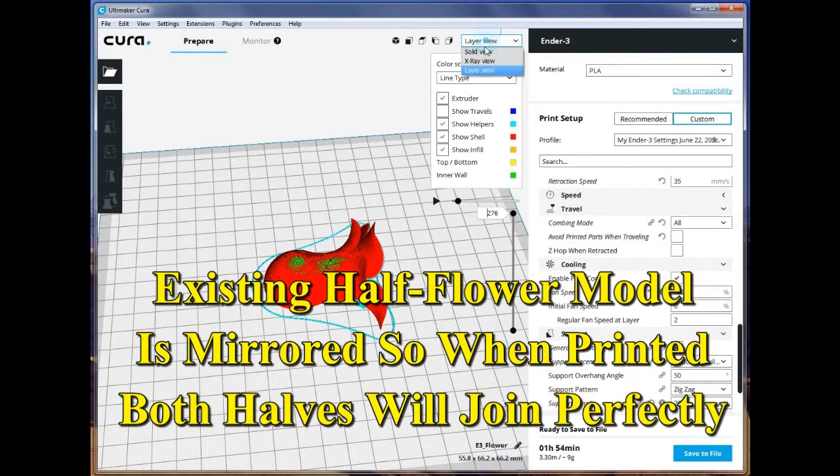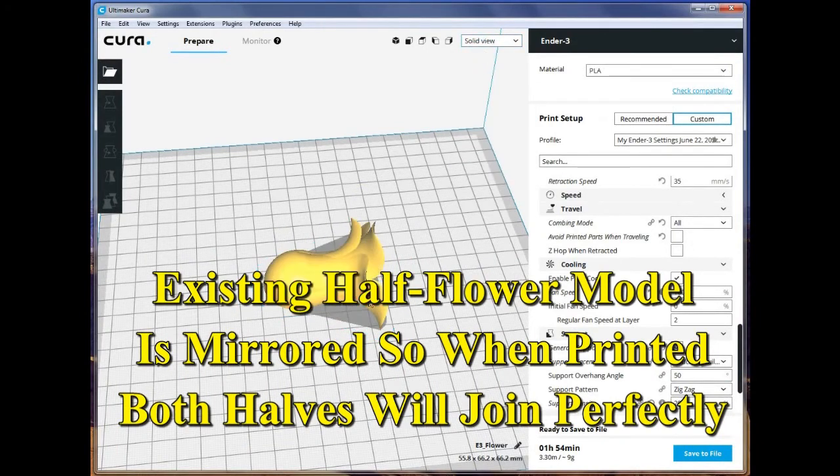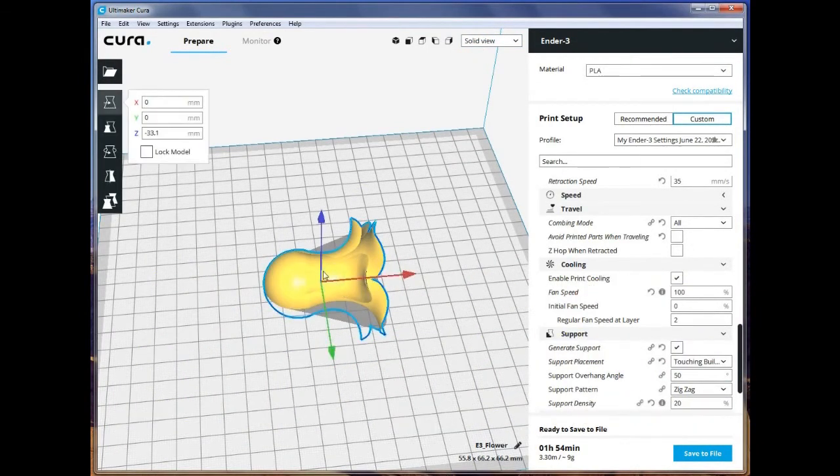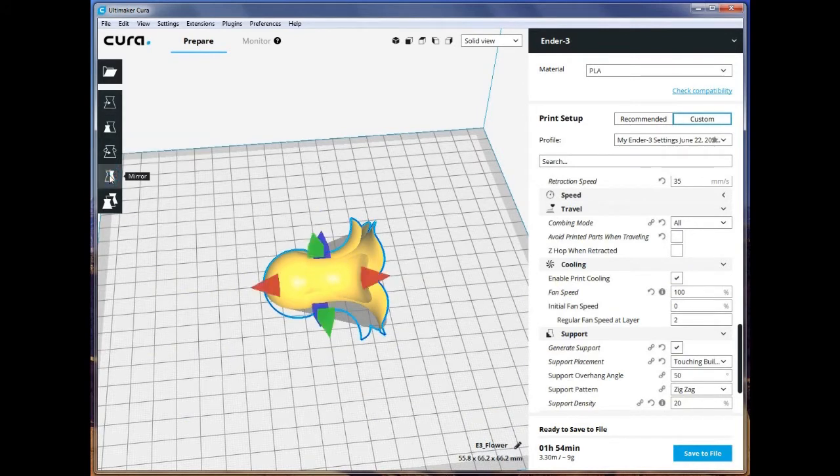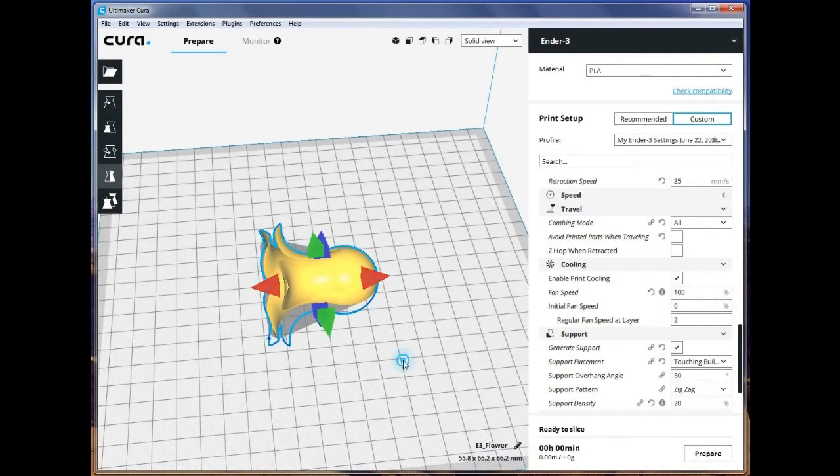And now we're going to mirror the flower. Click on the mirror function, select a direction to mirror. That's all it takes. I'm going to slice that.